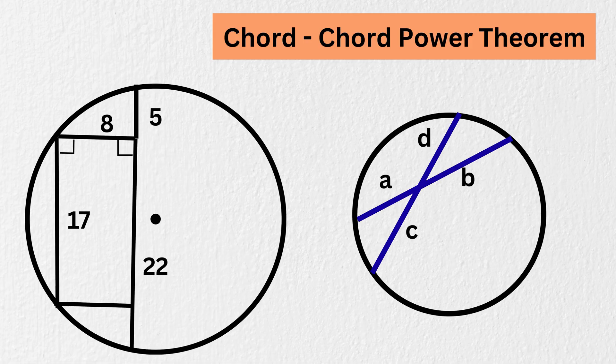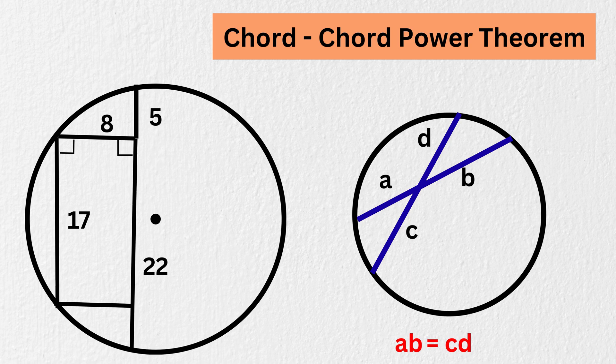The theorem says that if you multiply the lengths of the two parts of one chord, or A times B, then it will always be equal to the same multiplication for the other chord, or C times D.